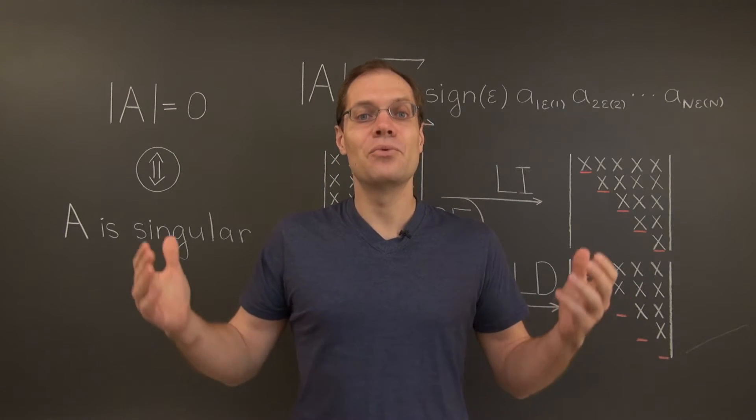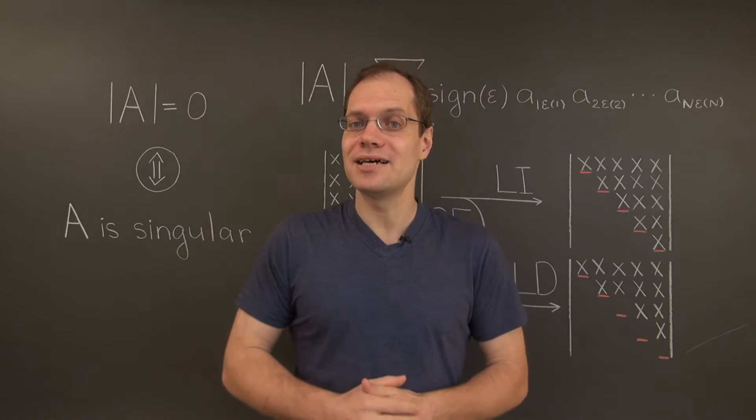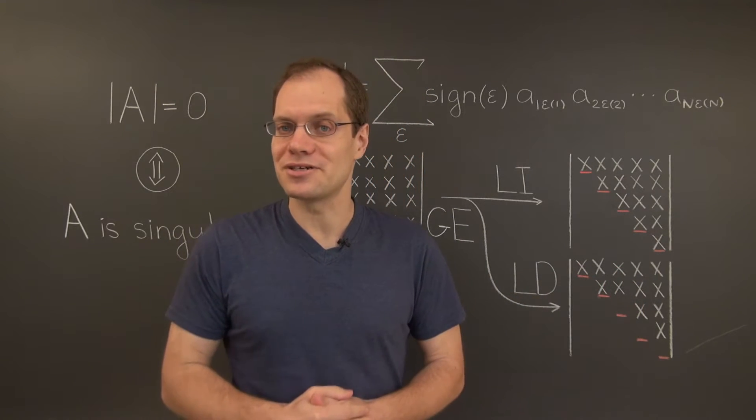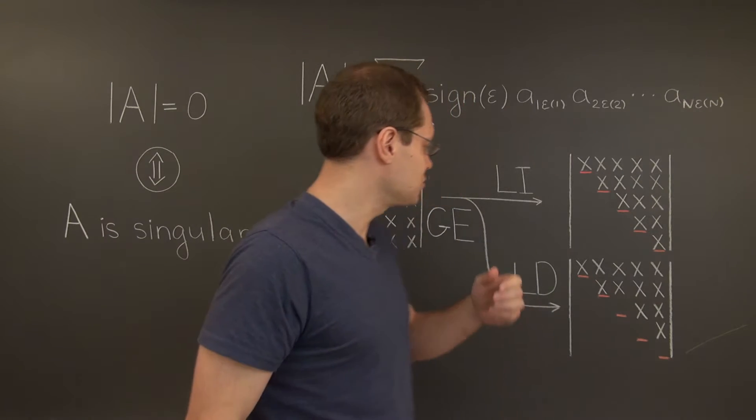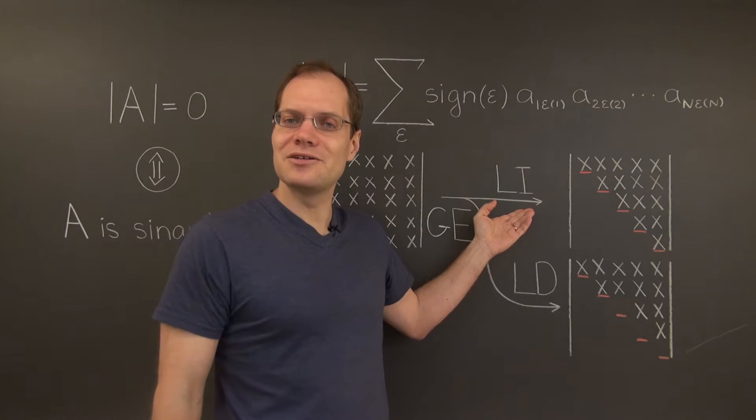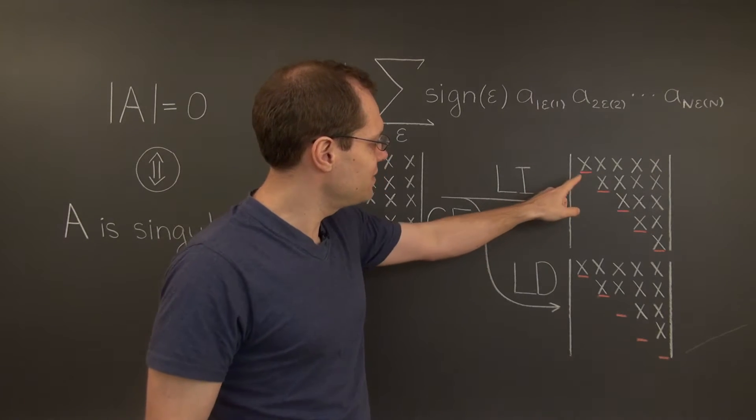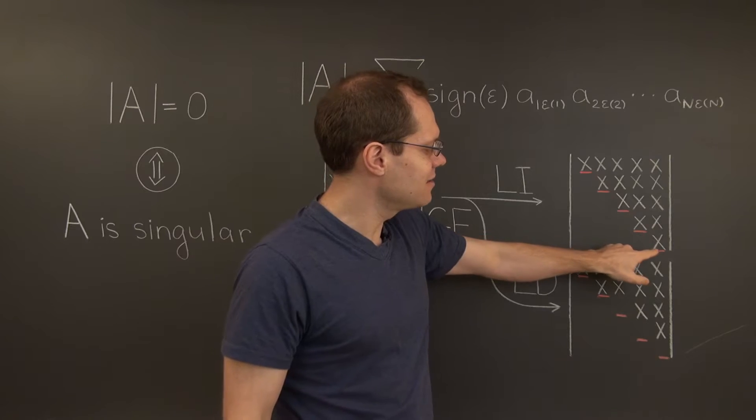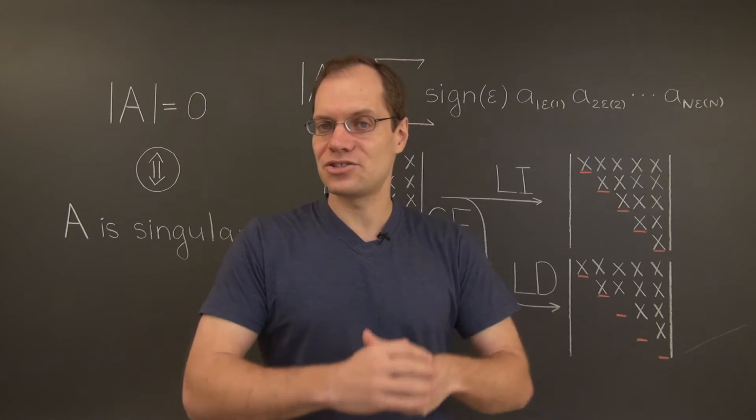So let's take a look at what we find at the end of Gaussian elimination. In both cases, whether the matrix is singular or not, we're guaranteed to end up with an upper triangular matrix. But in the case of a non-singular matrix, in other words, one with linearly independent columns, we're guaranteed to have non-zero diagonal entries. Take a moment to remind yourself why that's true.